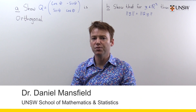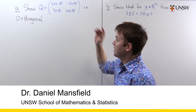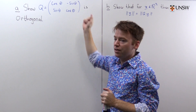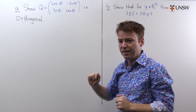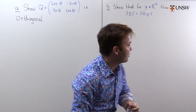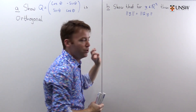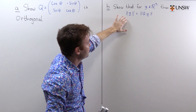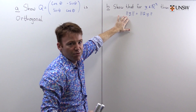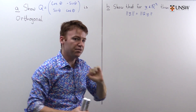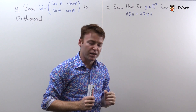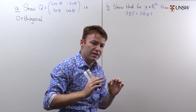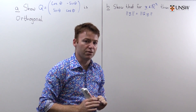Hello, in this video we're going to look at orthogonal matrices. We're going to start by taking this matrix Q and using the definition of orthogonal, show that this matrix is orthogonal. We're then going to look at what Q does to a vector — first showing that Q applied to a vector does not change the length of that vector, and then for part C we will show that Q is actually a rotation around the origin.